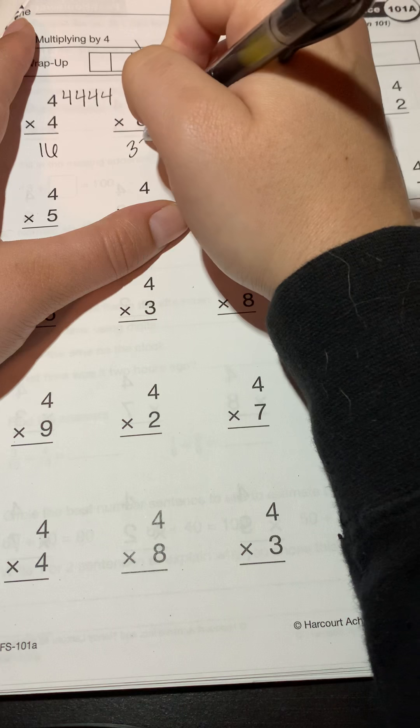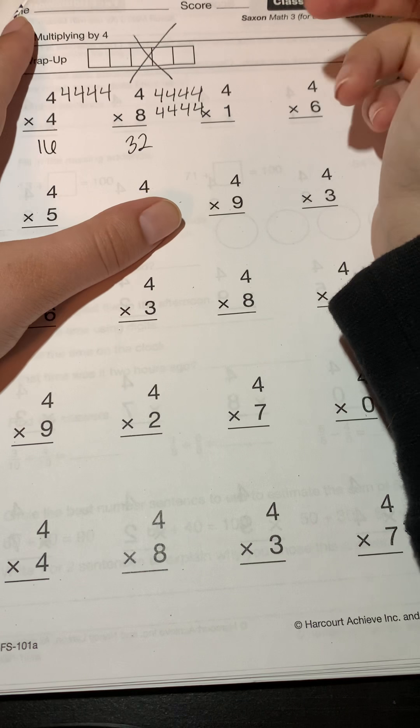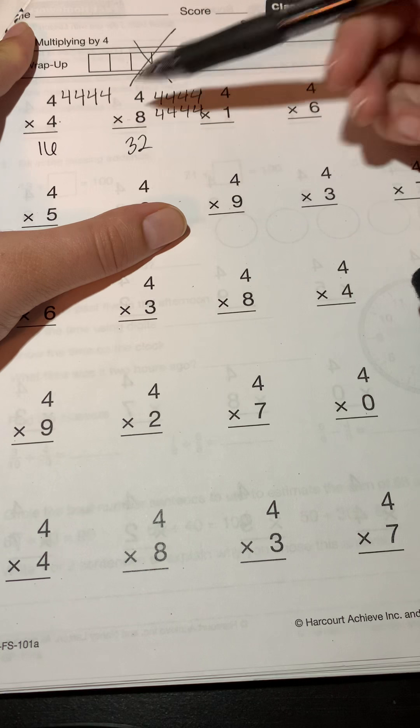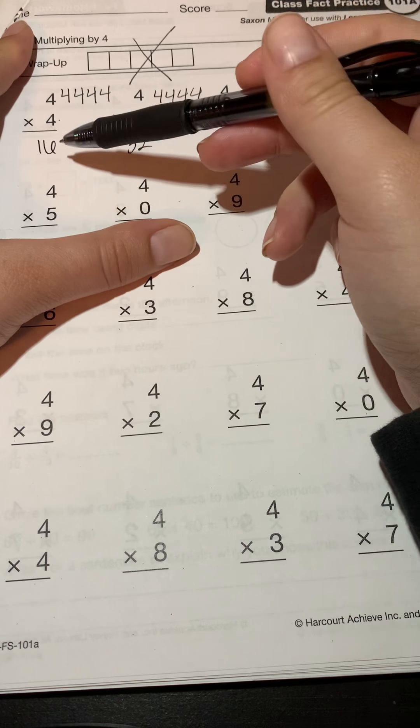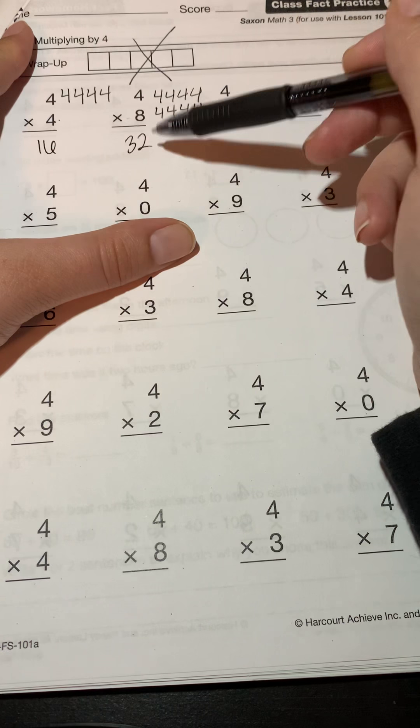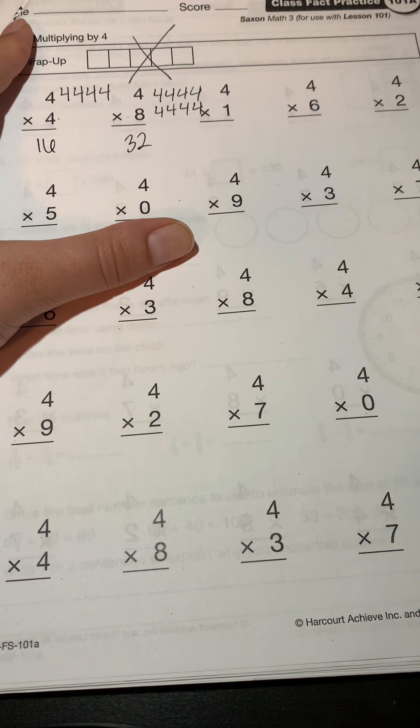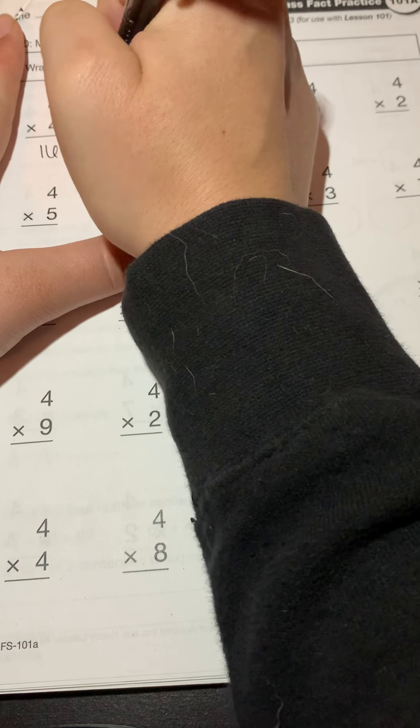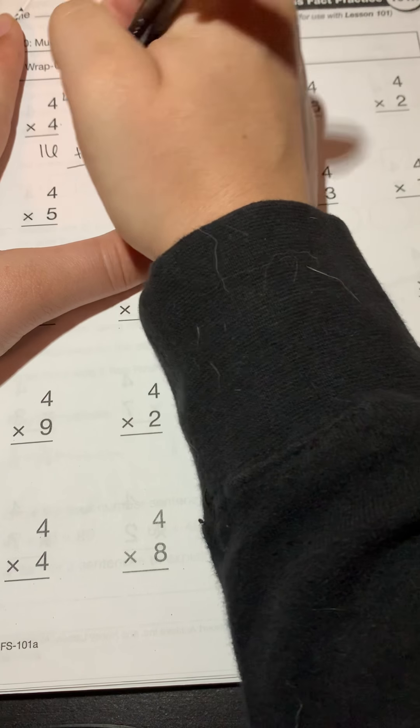Another strategy I can use is - look, this is a 4 and this is an 8. This is half of this one. So what does that mean I can do with my answer to this to get my answer to that? Double it, right. So I could do 16 plus 16 and that will give me the same answer of 32.